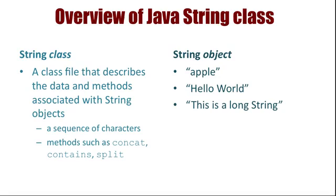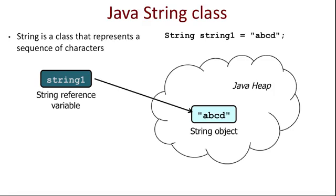Let's review the string class. This is a class that is already included in the Java language and enables you to use string objects without knowing all the details about how they work. The string class refers to the file that contains all of the implementation details of a string. A string object is an instance of a string, such as the string apple. A string is a sequence of characters.